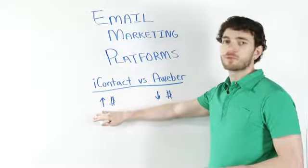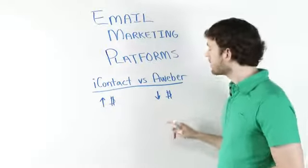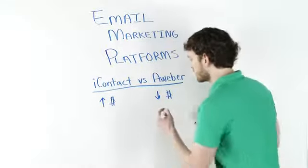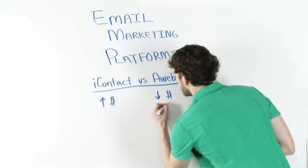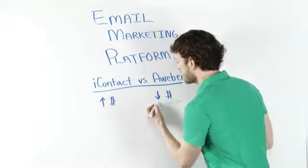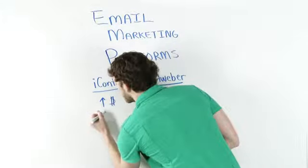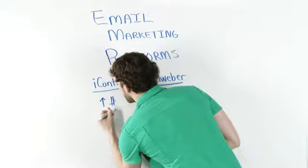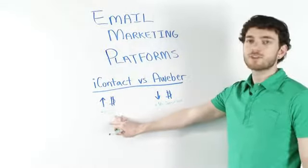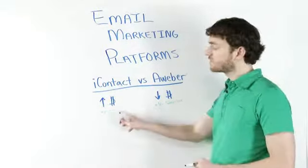The first thing you'll notice that I've left on the board right from the get go is the cost. iContact costs more money than AWeber. AWeber is going to charge you per subscriber on your list, and it's a very small fee. iContact is going to charge you per email sent, and per email sent can get kind of expensive as your list grows, because if you're paying every single time you send an email, that gets expensive.